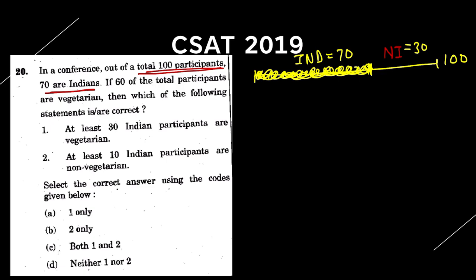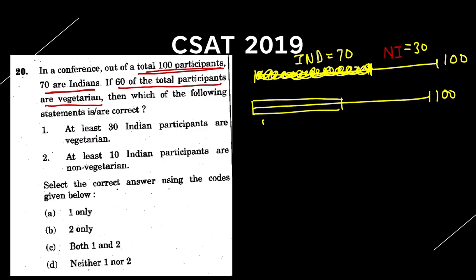Continuing: out of the 100 total participants, 60 are vegetarian and 40 are non-vegetarian. Now we need to determine which statements are correct. Whenever questions say 'at least' or 'at most,' they are asking for the maximum or minimum value. So we need to find the range of possible values for the number of Indian vegetarians and Indian non-vegetarians.